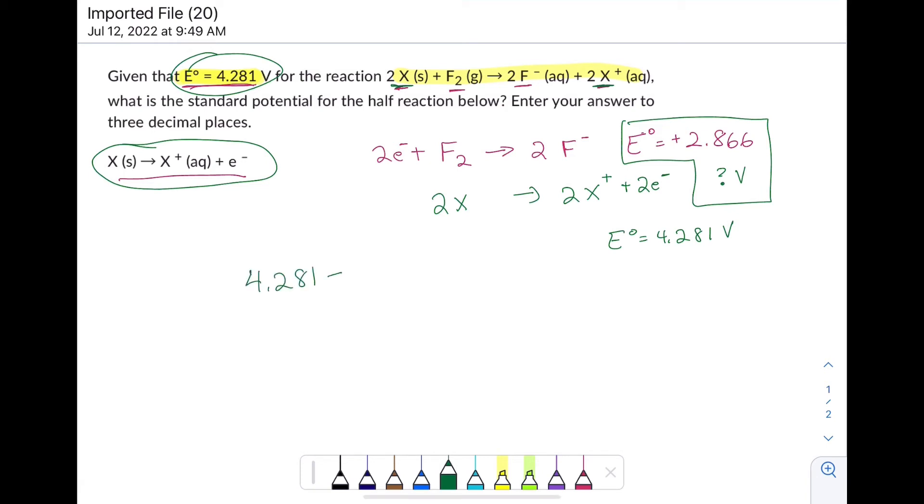So 4.281 minus 2.866 is the cell potential contributed by the X going to X plus half reaction. Punch that in your calculator. Keep three decimal places. I get a positive 1.415 volts.